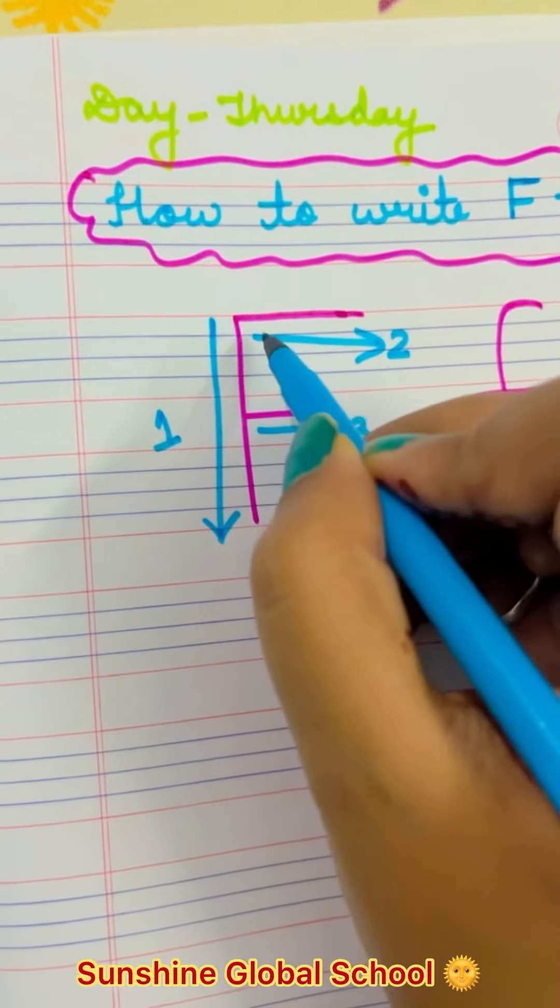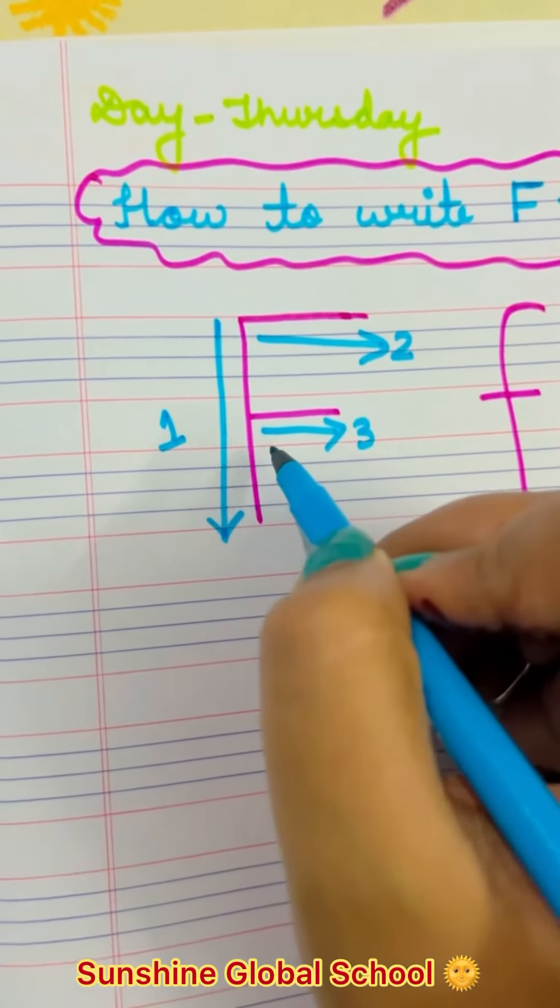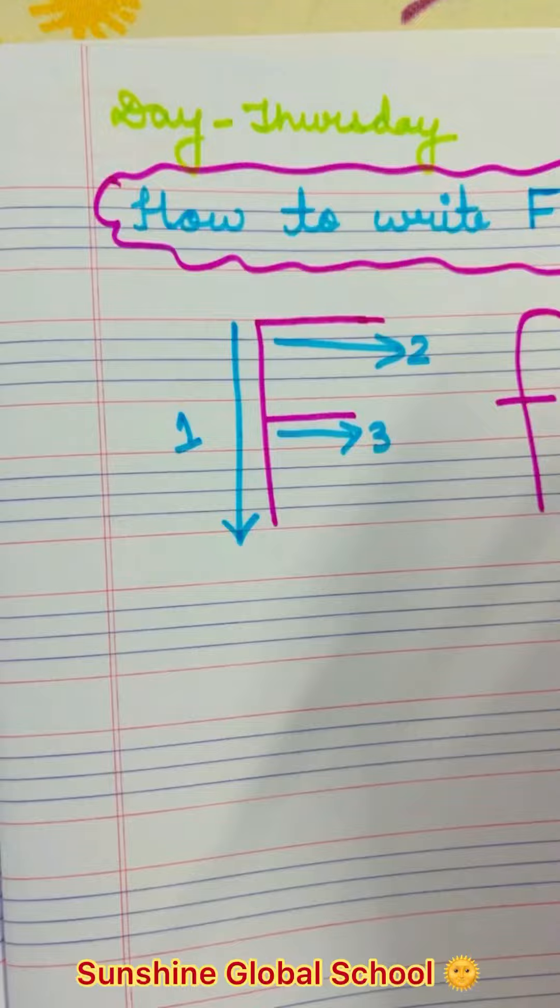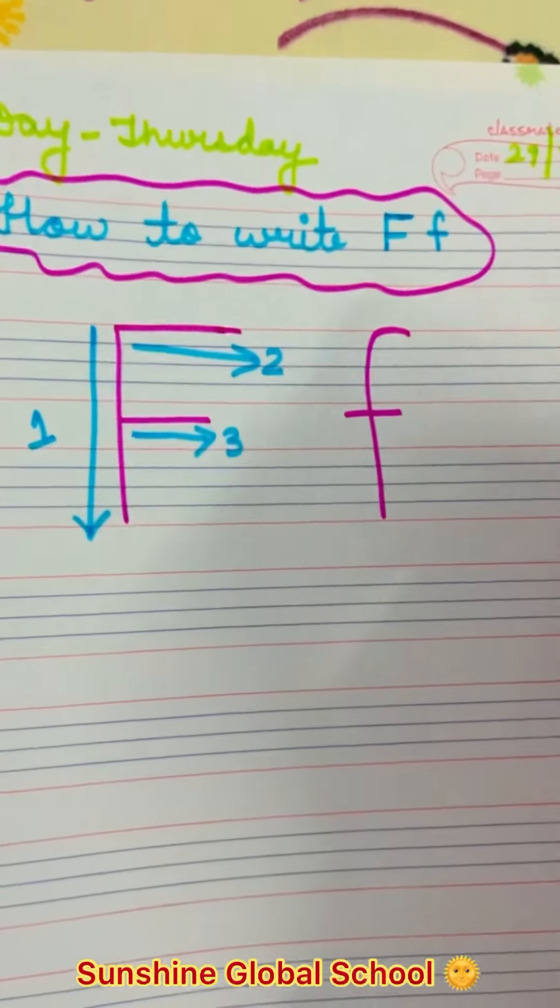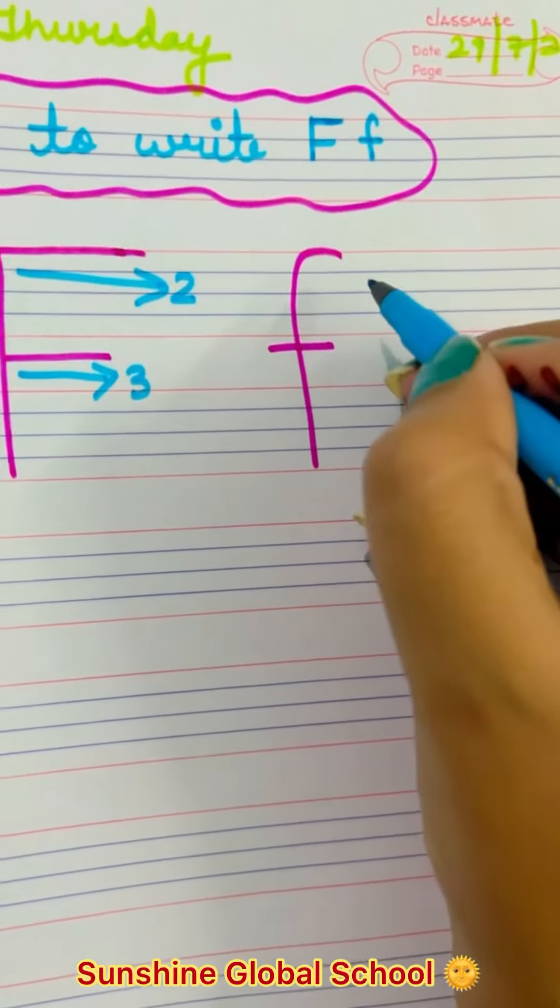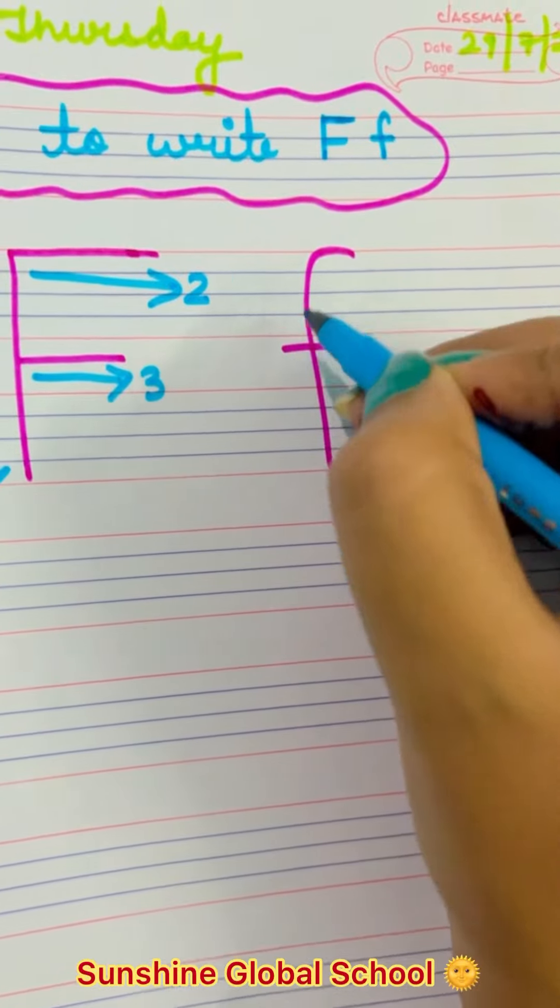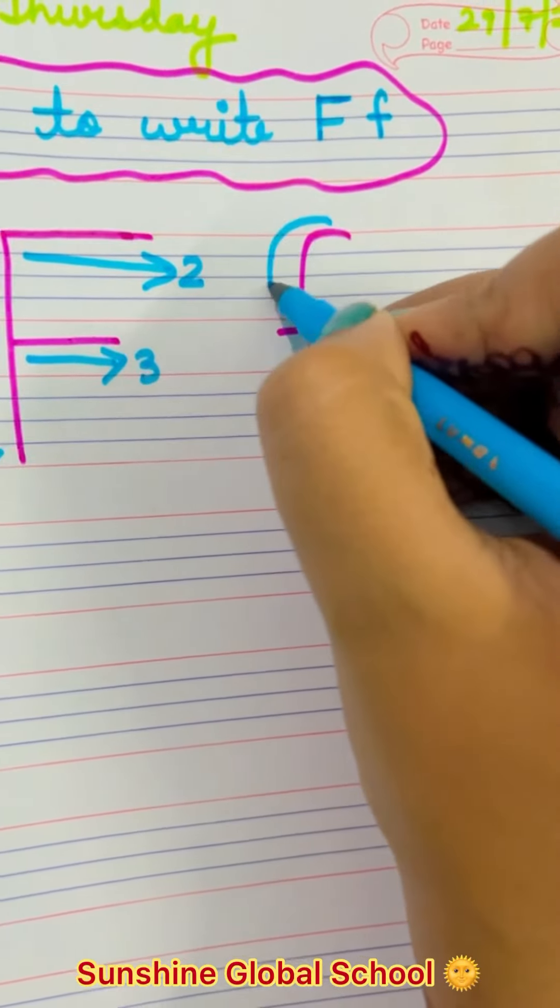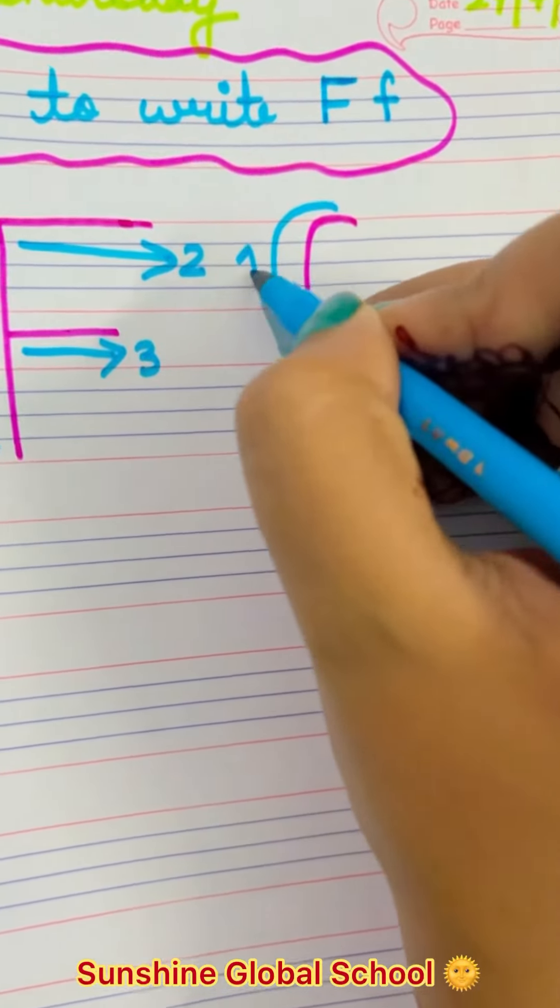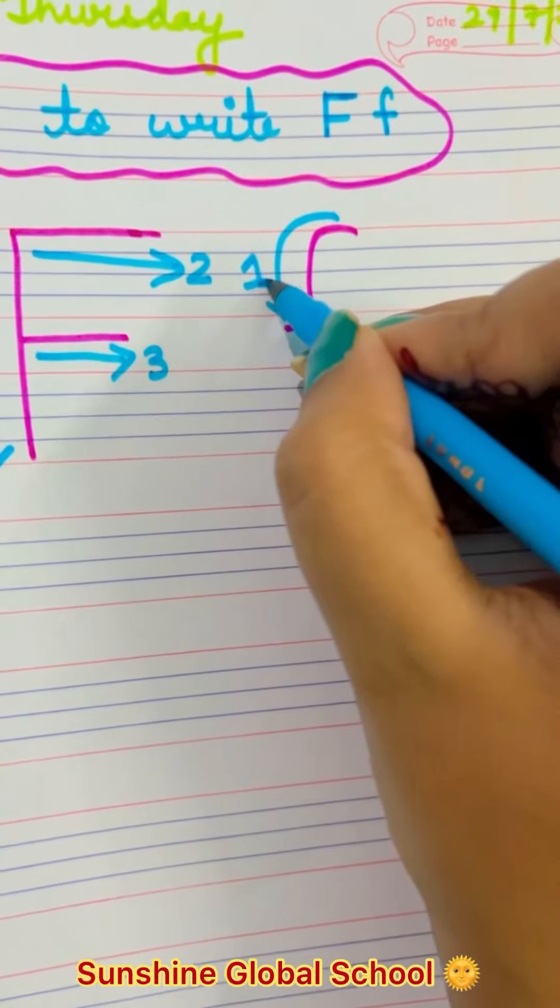First step, standing line. Second step, long sleeping line. Third step, short sleeping line. Then come to the baby F. You have to start with a curve, so step number one is curve.